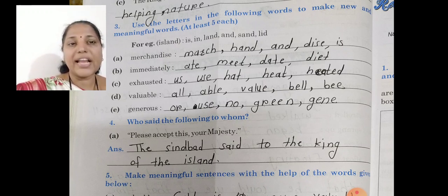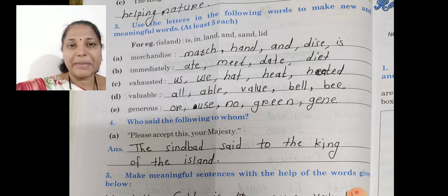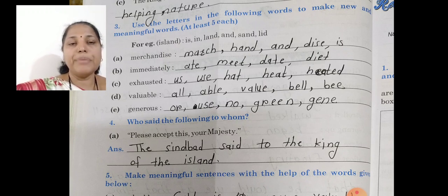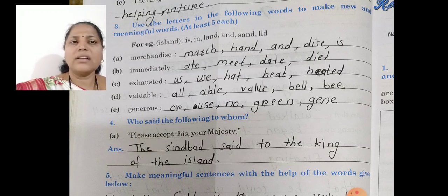D number is 'valuable.' Valuable se kaun kaun se spellings humne yahaan banai: all, able, value, bail, be. Okay, you also write other spellings.